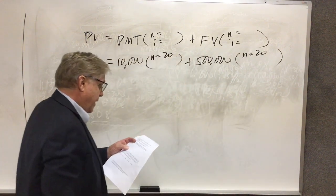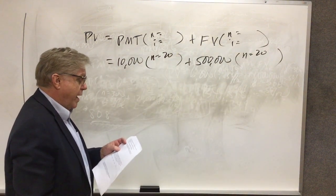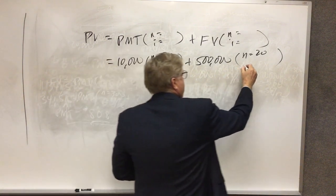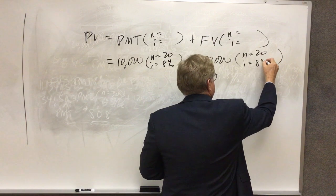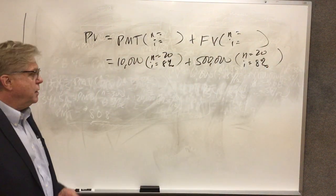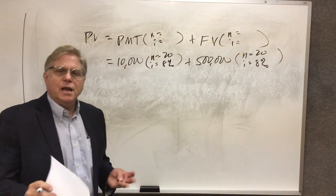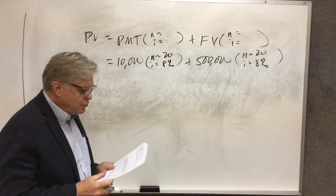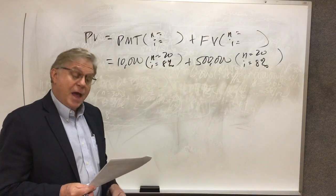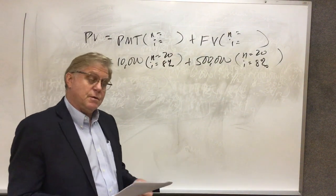The required rate of return is 8 percent. I haven't really said anything about whether it was 8 percent compounded annually, monthly, or semi-annually. The vanilla assumption is if there's no statement about frequency of compounding, then it's annual compounding.